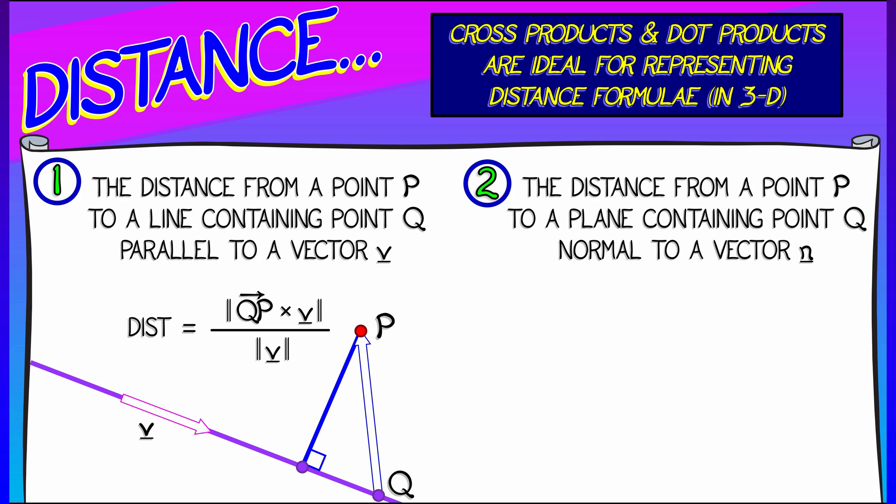And likewise, if you want to know the distance from a point p to a plane that passes through a point q and is orthogonal to a vector n, then it's basically the same formula, but you're using the absolute value of the dot product of qp with n instead of the cross product. Again, you normalize by the length of n.